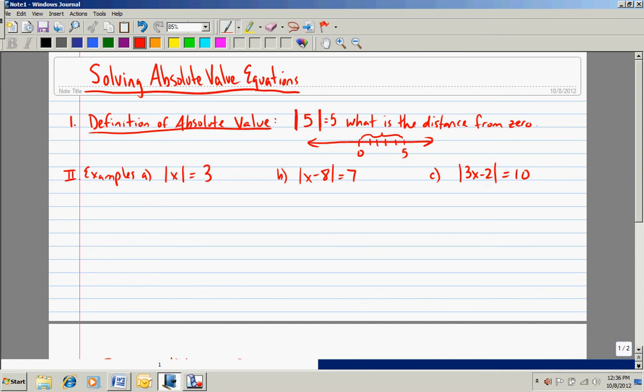Well, there's another number actually that would have a distance of 5 from 0, and that would be negative 5. So we could also say that the absolute value of negative 5 is also 5 because negative 1, negative 2, negative 3, negative 4, negative 5 would be 5 spaces from 0. So that's the definition of absolute value, and that's what we'll consider as we look at the next three example problems.